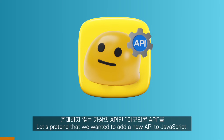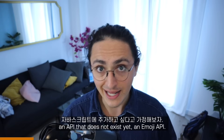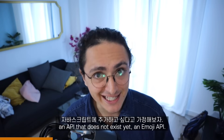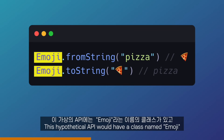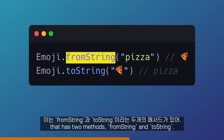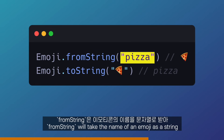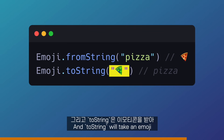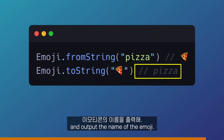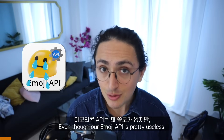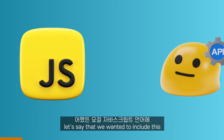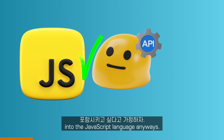Let's pretend that we wanted to add a new API to JavaScript — an API that does not exist yet: an emoji API. The emoji API would look something like this. This hypothetical API would have a class named Emoji with two methods: fromString and toString. fromString will take the name of an emoji as a string and output the emoji, and toString will take an emoji and output its name. Even though our emoji API is pretty useless, let's say we wanted to include it in JavaScript anyway.